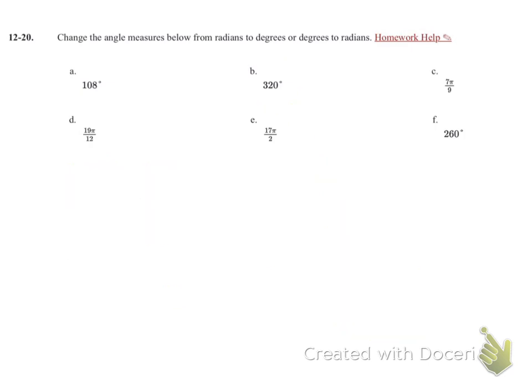Let's look at problem C. 7 pi over 9. Now I have my radians in the numerator. So to cancel that out, I'm going to put the radians in the denominator. The pi's make a giant one. So my radians are now gone.